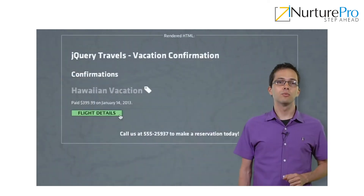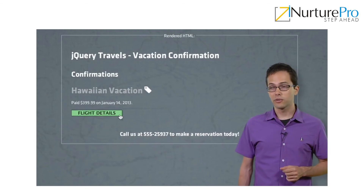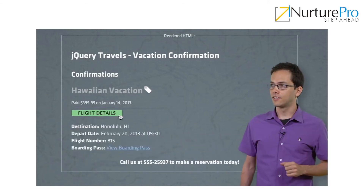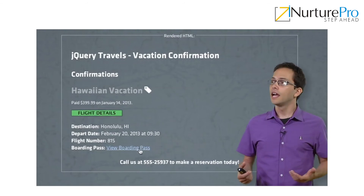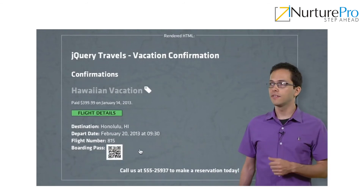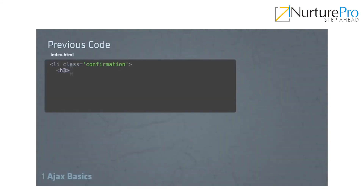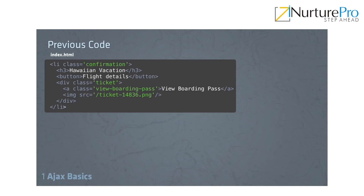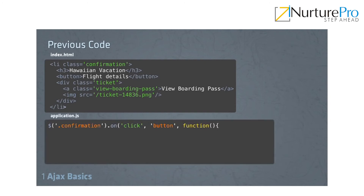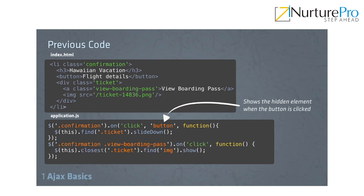Now let's jump into an example where we can use some Ajax. This should look familiar — it's from jQuery. You can see here when we click on Flight Details, it gives us some details from the flight. And when we click on View Boarding Pass, it gives us an image. Here's some of the code from that jQuery example. We have a title Hawaiian Vacation, a button Flight Details, and a div where we can click to view the boarding pass. But none of the data we need is loaded in there yet. We have event handlers — if someone clicks the button inside the confirmation class div, it will find the ticket and reveal it. Then we have another click handler that looks for the View Boarding Pass link, and if that gets clicked, it will show the boarding pass.